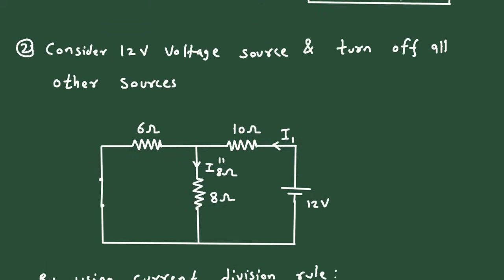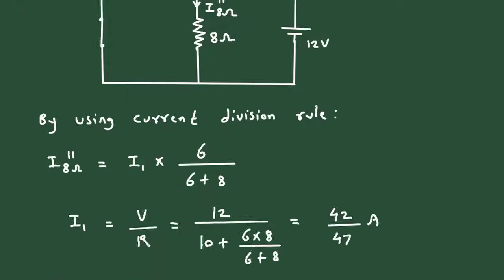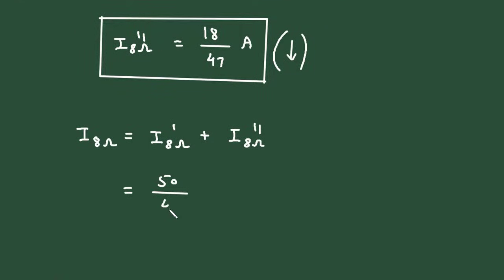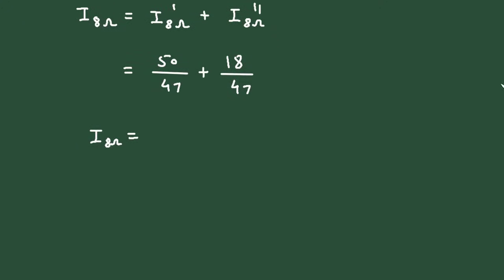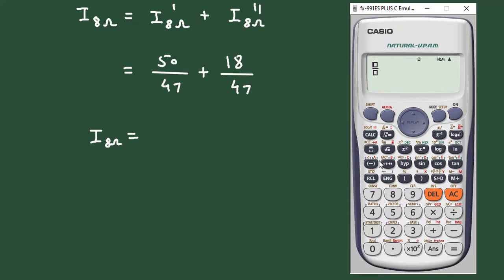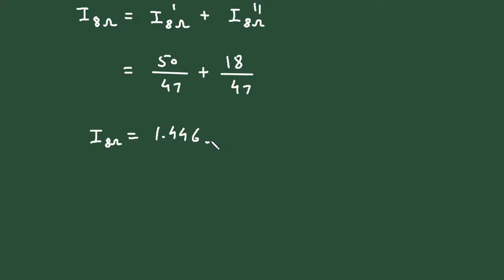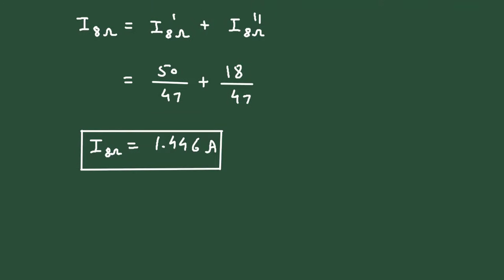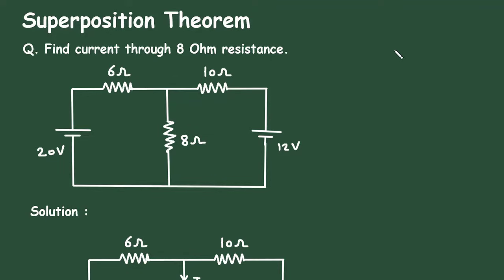So I8 ohm equals 50 divided by 47 plus 18 divided by 47, which gives 1.446 ampere. This is how we can find the value of current by using superposition theorem. Check the link in the comment section and install the app for free. Thanks for watching.